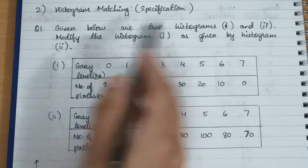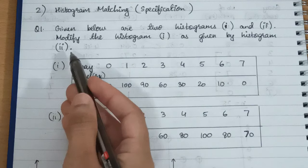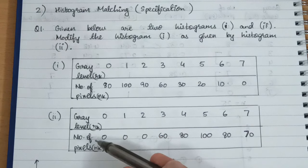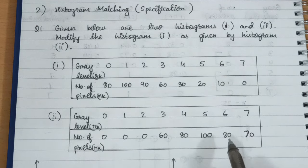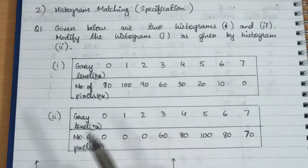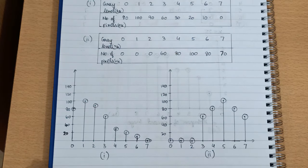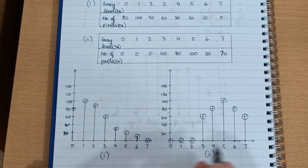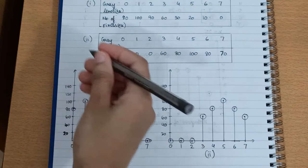Now we have a question here. Given below are two histograms, one and two — modify histogram one as given by histogram two. We have the gray level and the number of pixel values for both histograms, and based on these values what we do first is draw the two histograms. As you can see, I have drawn the two histograms — the first one and the second one.